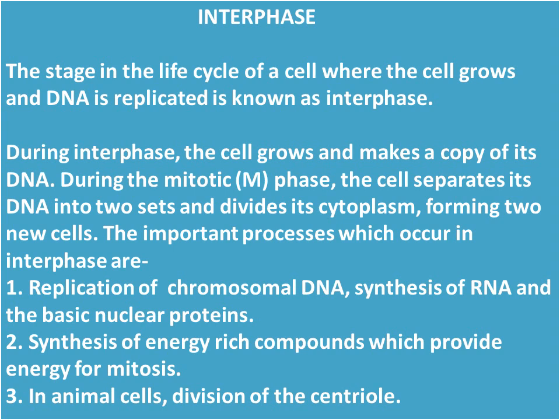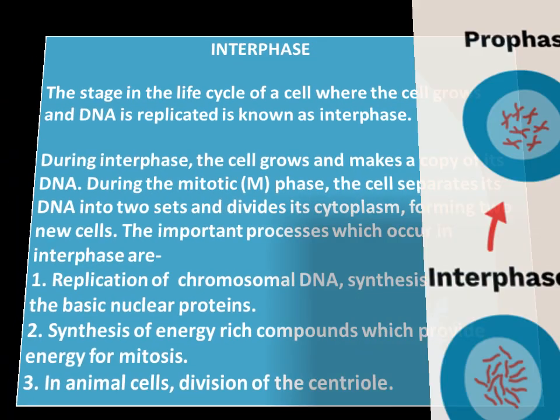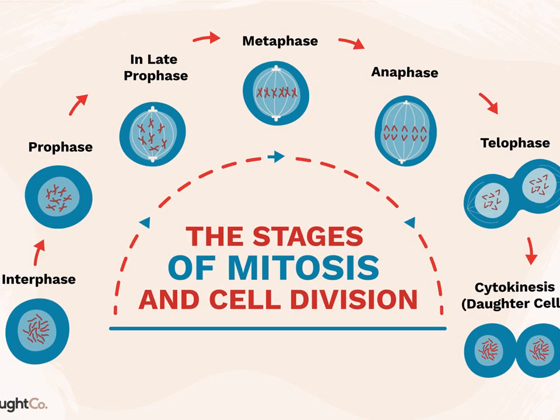The important processes which occur during interphase are: number one, replication of chromosomal DNA and synthesis of RNA and the basic nuclear proteins; number two, synthesis of energy-rich compounds which provide energy for mitosis; and number three, in animal cells, division of the centriole.